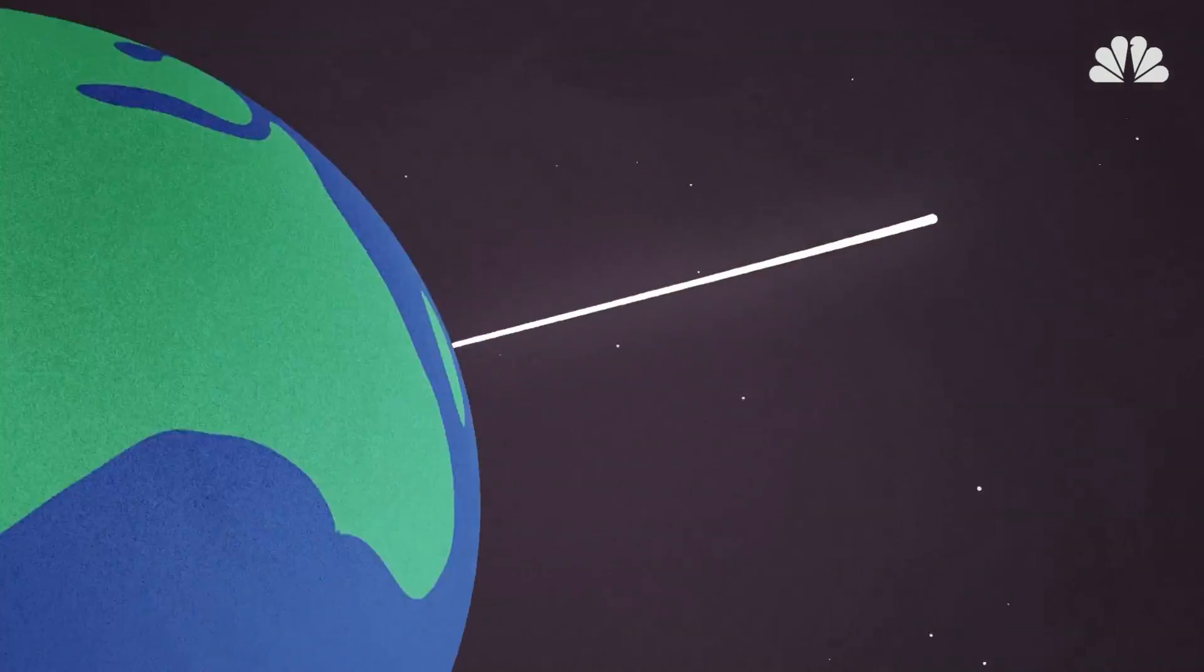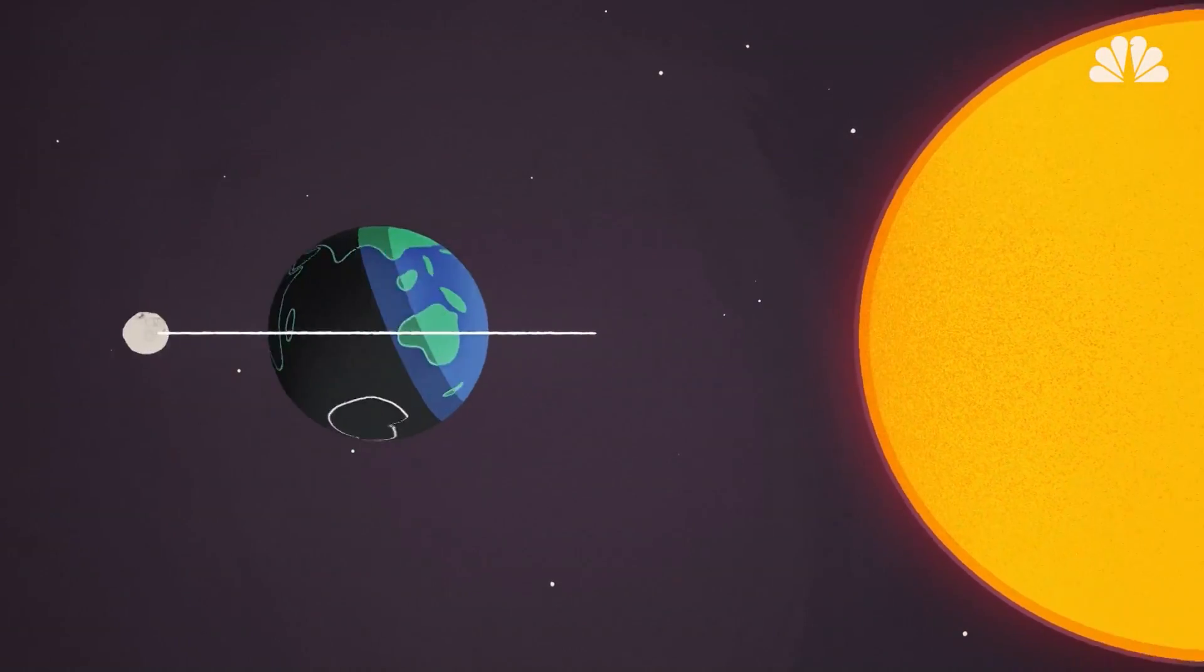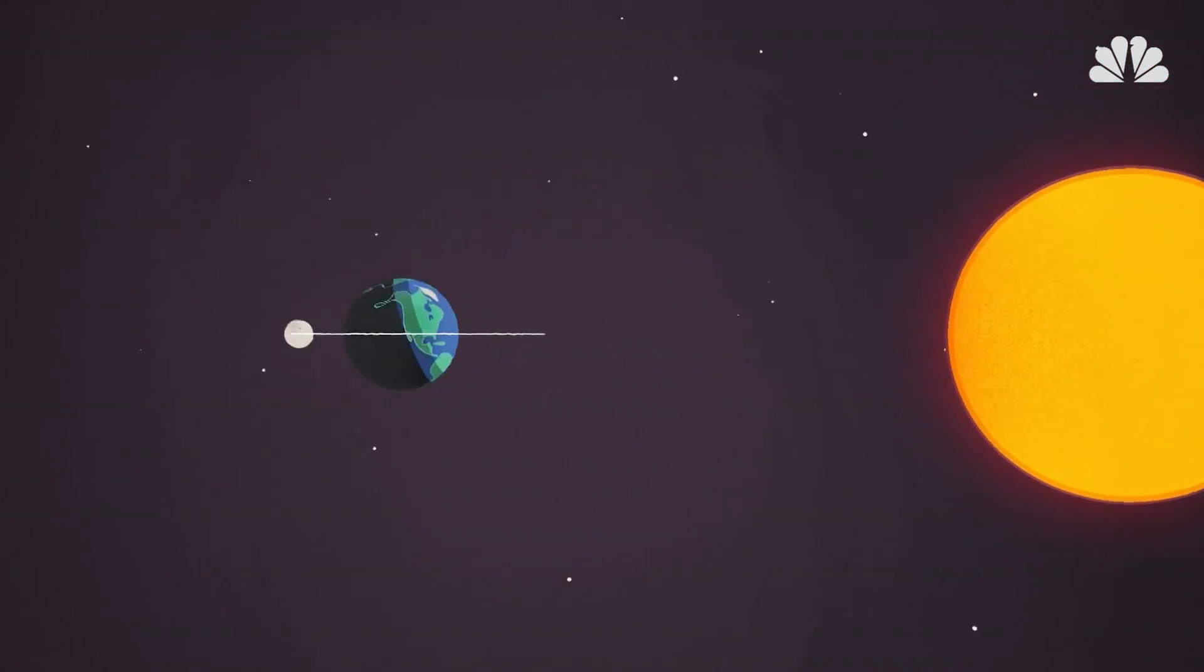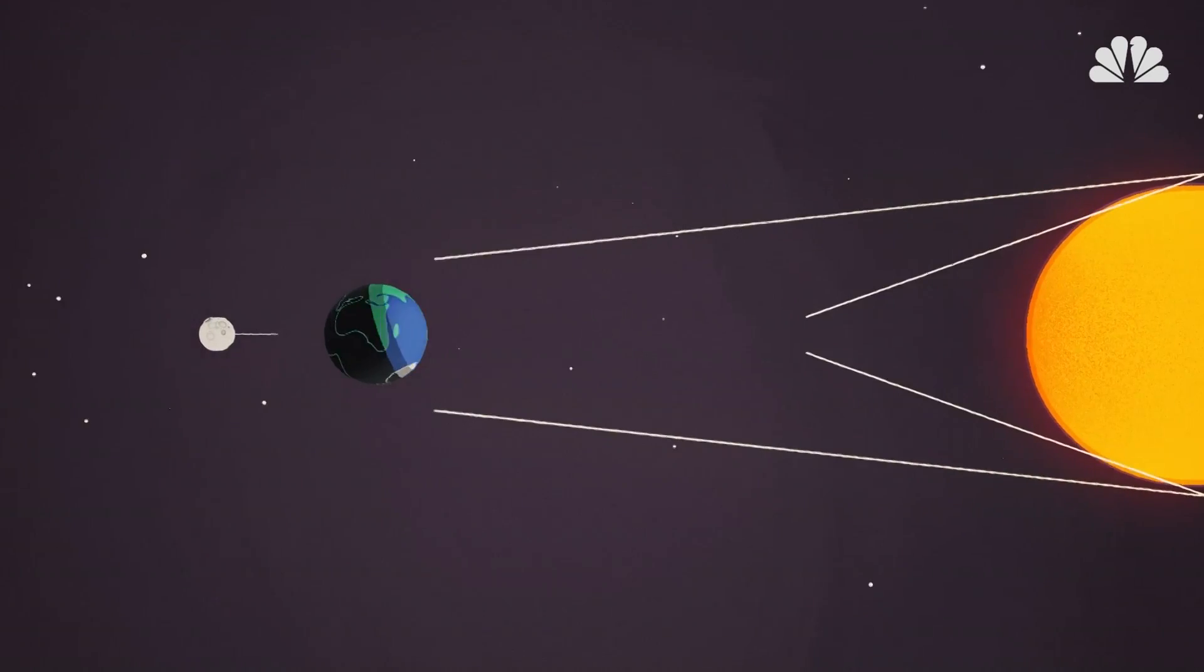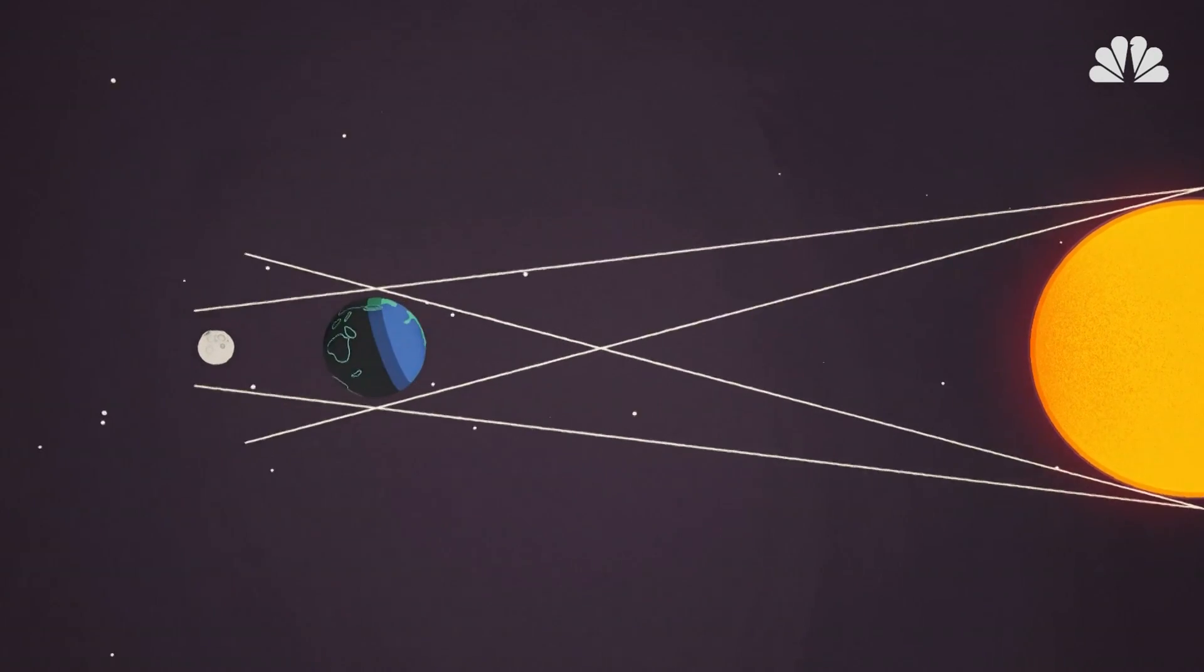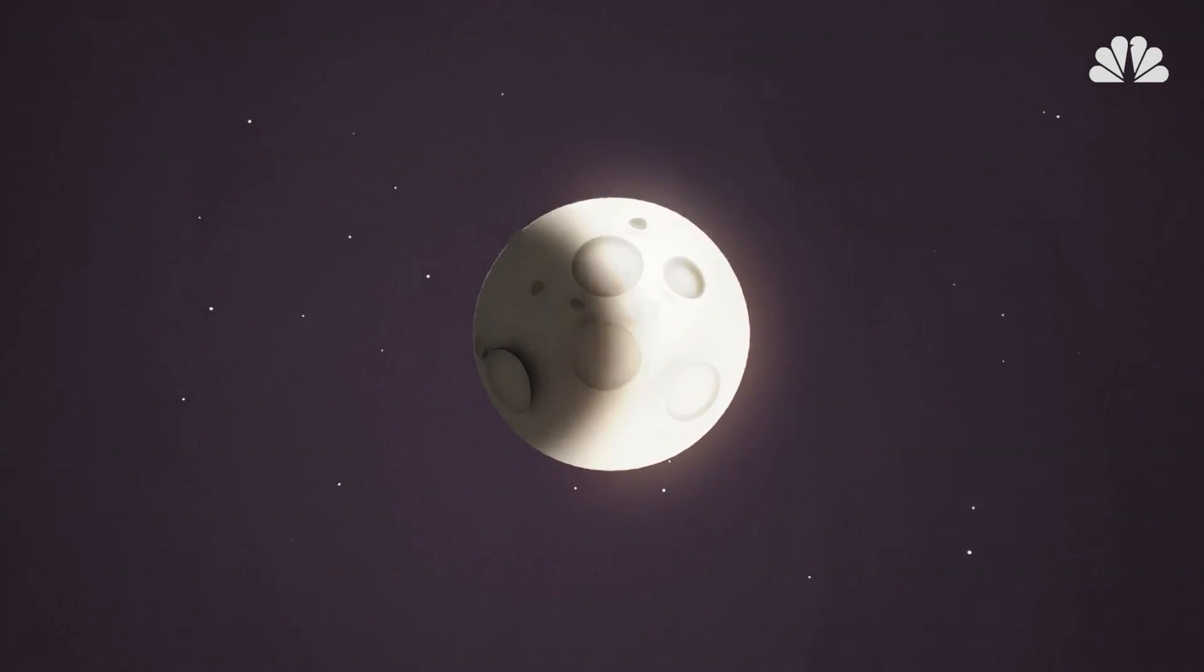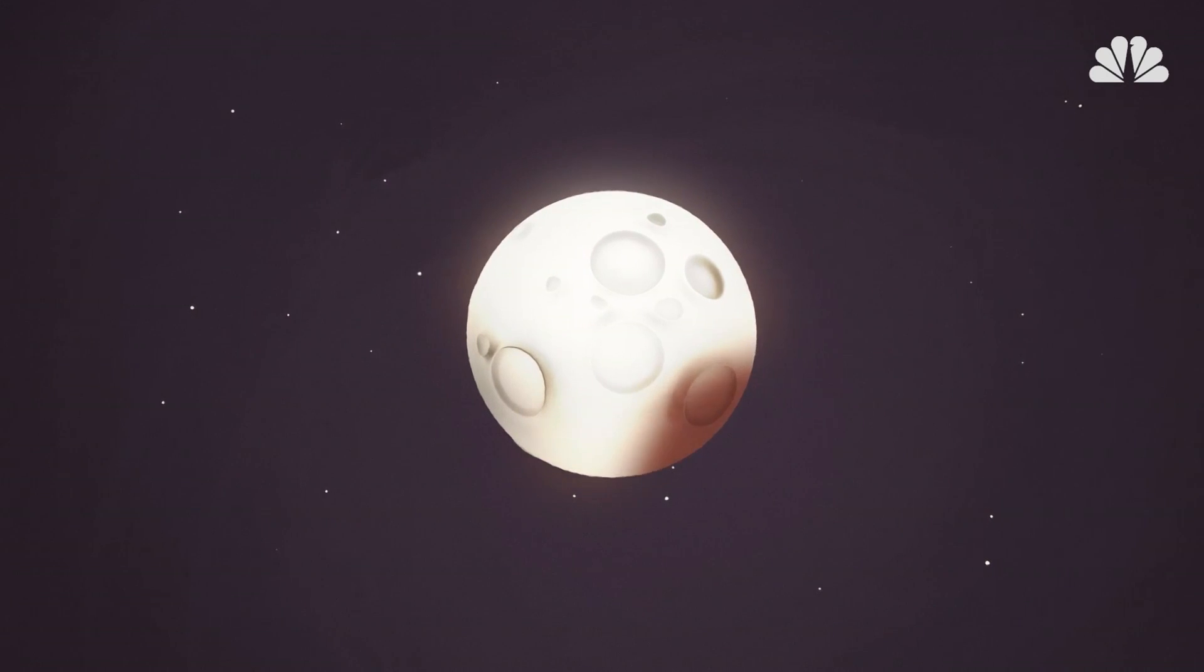Lunar eclipses occur when the Moon, Earth, and the Sun are aligned, and the Moon passes into Earth's cone-shaped shadow. But not all alignments are the same. Sometimes the alignment isn't perfect, causing a partial lunar eclipse.